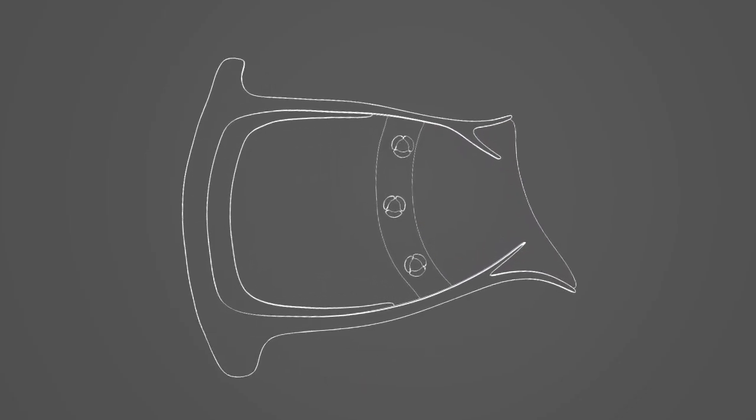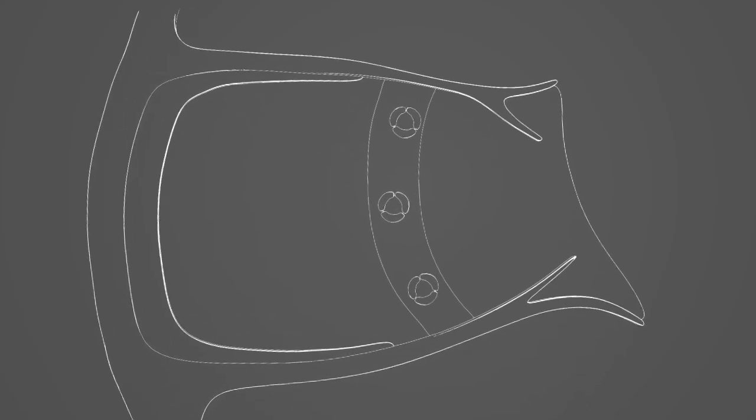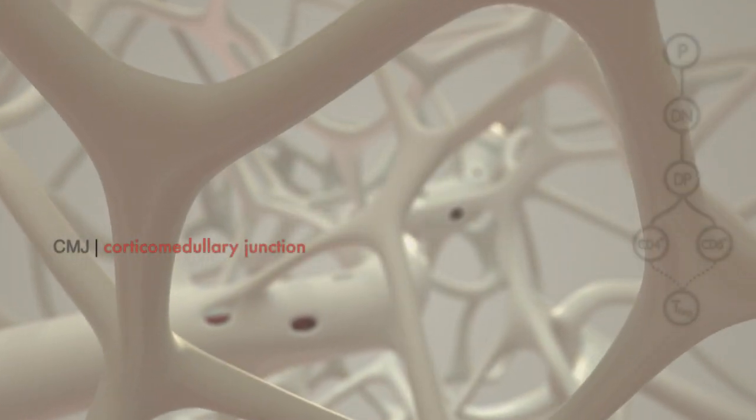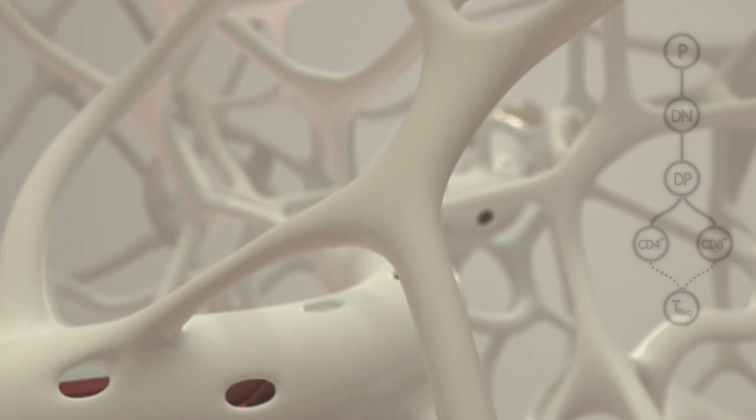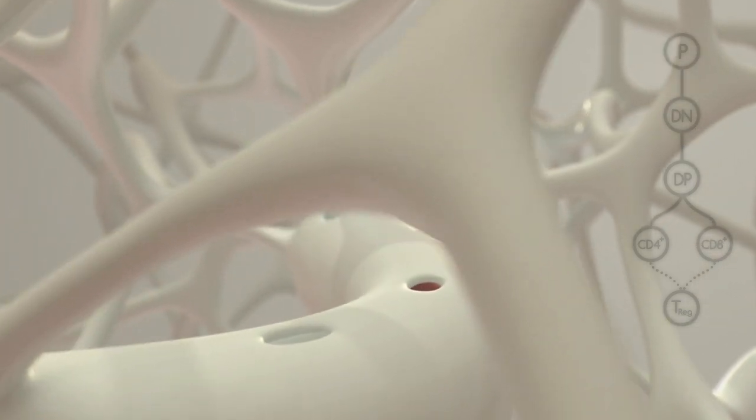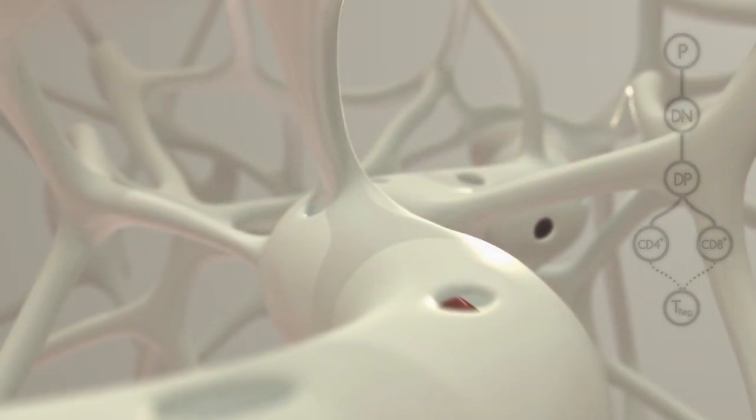The following animation depicts the intracellular communication that regulates thymocyte trafficking and development. In the postnatal thymus, circulating progenitor cells migrate into the thymic parenchyma through the enriched vasculature that surrounds the corticomedullary junction.